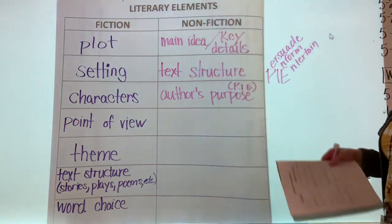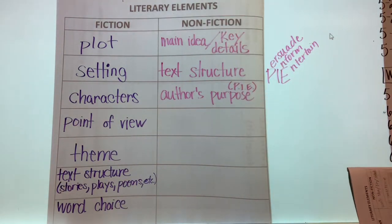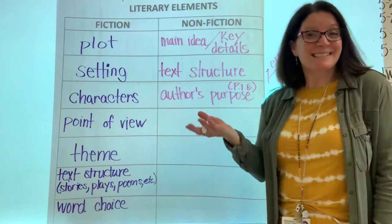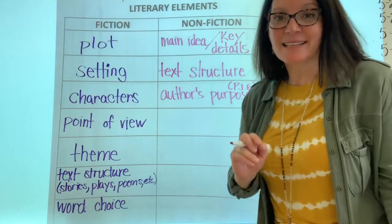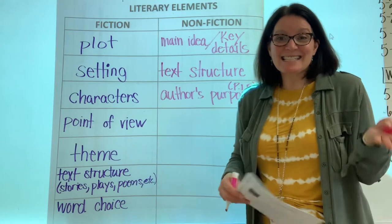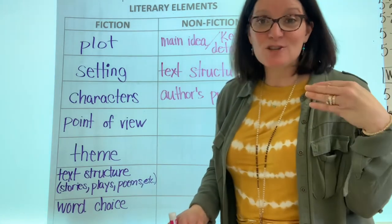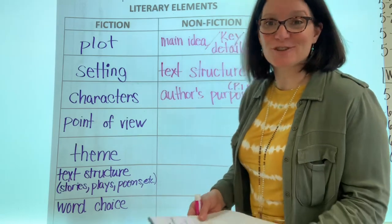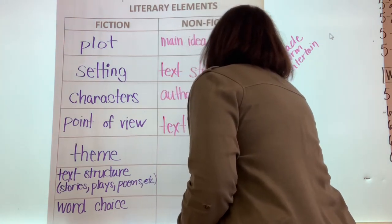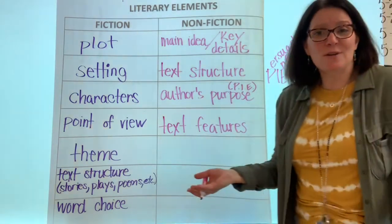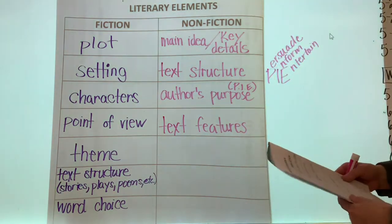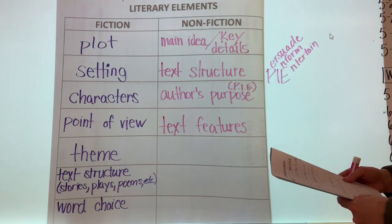Thinking more about the literary elements for nonfiction texts — we have text structure. We've also been talking about what texts have: things like headings, titles, tables, charts, graphs, sidebars. What do we call those? The things in the text that help us understand what's going on and help us visualize? Text features. You've got it. Let's add that — that is another literary element. I can't believe how much we already know about literary elements and didn't even know they were called literary elements.